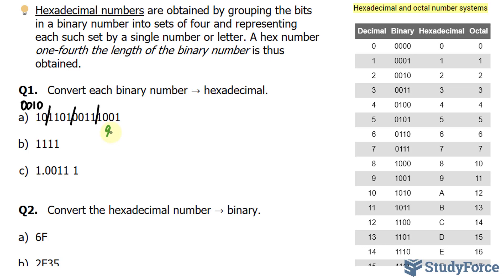In case you don't want to use this chart, what you can do is simply convert this number into decimal. That can be done by multiplying this one by 2 to the power of 0, and this one by 2 to the power of 3.